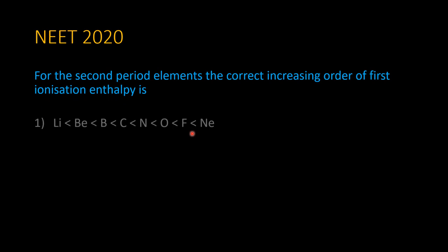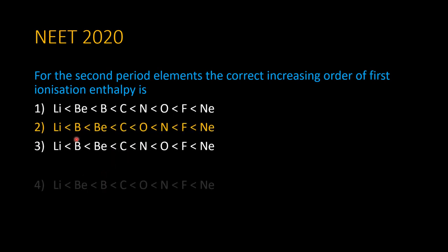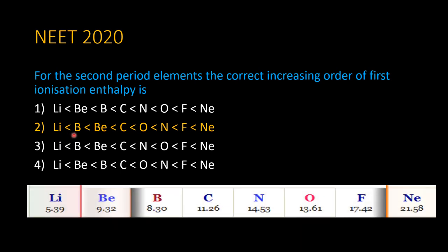So now let us go back to the question. The general trend is ionization potential increases across the period because nuclear charge increases while electrons are added into the same orbital. But we see two anomalies: one for boron and beryllium, and another for nitrogen and oxygen — or generally group 2 vs group 13, and group 15 vs group 16. Boron has a lower ionization potential than beryllium, and oxygen also has a lower ionization potential than nitrogen. Hope you understood. Thank you.